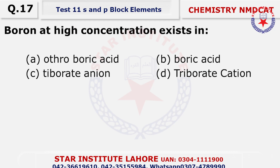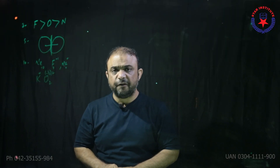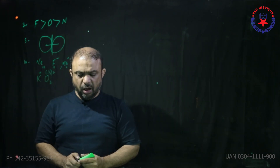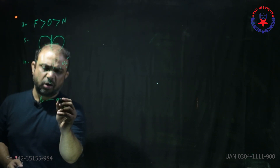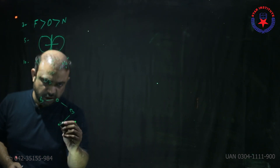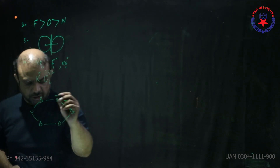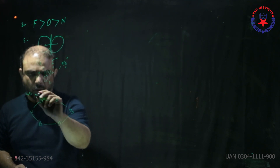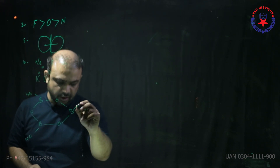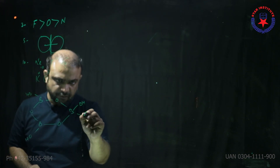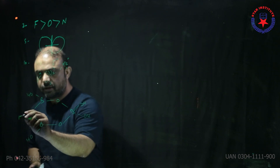Question number 17: Boron at high concentration under very strong conditions exists in the tetraborate ion form. Drawing the tetraborate ion structure — boron, oxygen, boron in a six-membered ring of oxygen, with one OH on each side. Boron's valency of three must be satisfied. The two negative charges are on the attached parts — this is the tetraborate ion (triborate noted verbally).